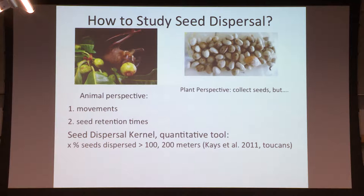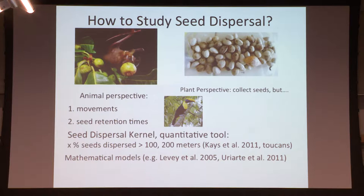This is a nice quantitative tool, and you can get information like what percentage of seeds could be dispersed from the parent plant 100 meters and 200 meters away. This has been done with toucans in Case et al. We can use these seed dispersal kernels to parameterize mathematical models, which have been done in a few studies, to look at spatial patterns.